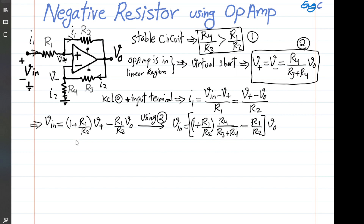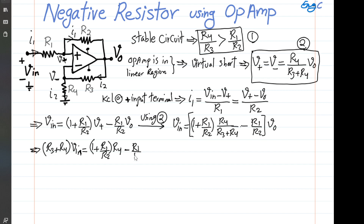Multiplying both sides by (R3 plus R4), we get: (R3 plus R4) times Vin equals (1 plus R1 over R2) times R4, and then minus R1 over R2 times (R3 plus R4), all times Vout.